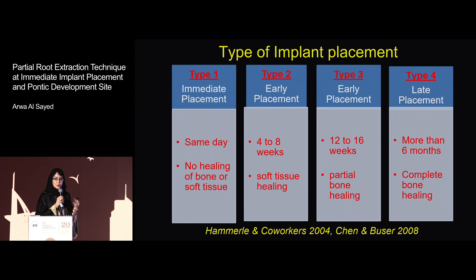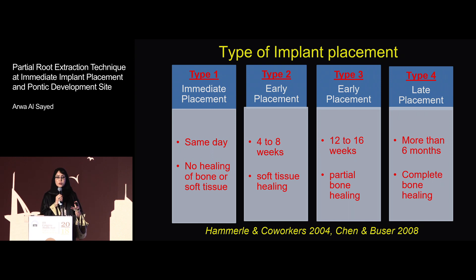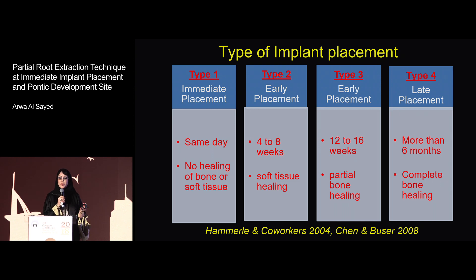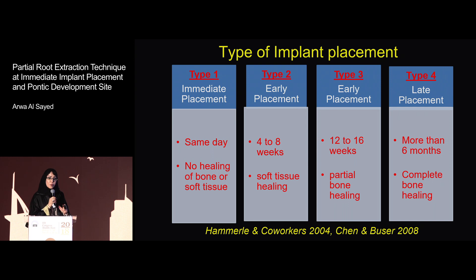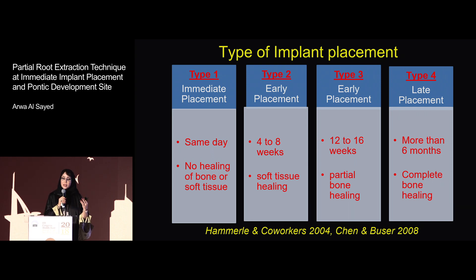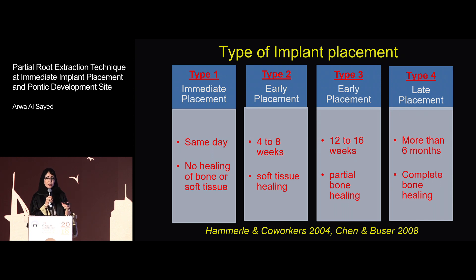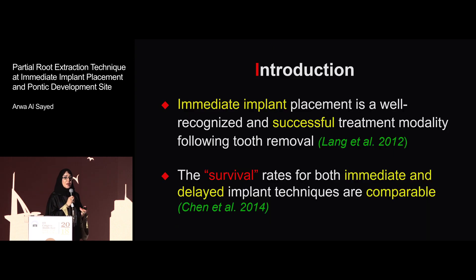Type 2 is early placement, which is four to eight weeks after extraction when you have only soft tissue healing. Type 3 is still early placement at three to four months, when you have partial bone healing. And then Type 4 is late placement, when the socket is totally and completely healed.